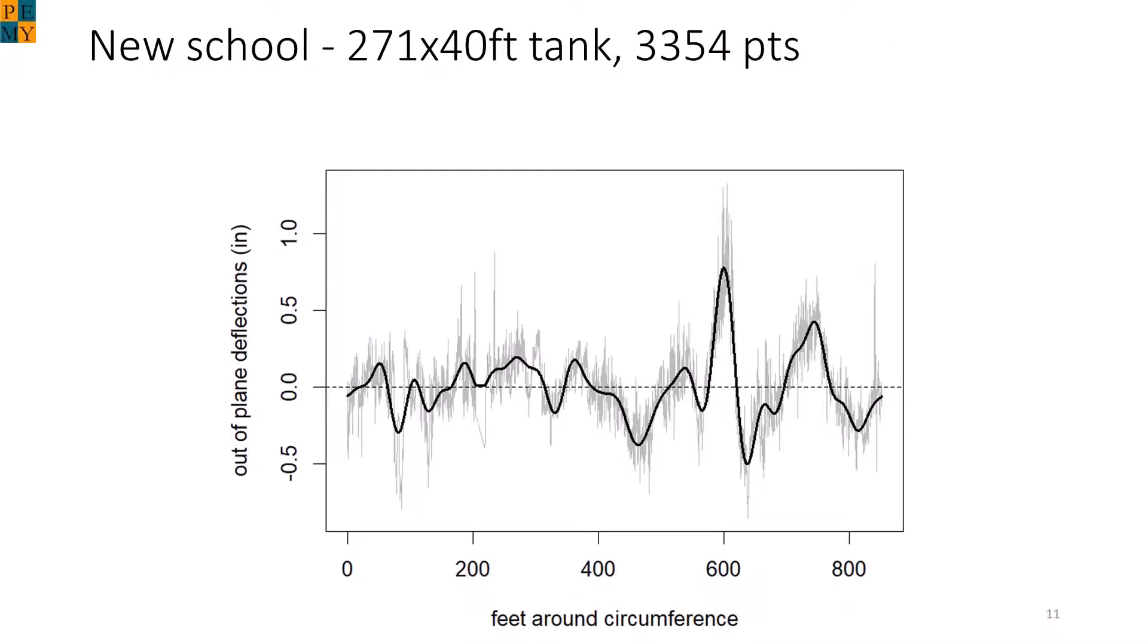Here is the actual laser scan data we have used. Notice the jagged appearance. Much of this is noise, which is inherent to all data sets. However, there is a clear signal as well. The heavy black line is the differential settlement, showing how much it is above or below the tilt plane, represented by the dotted zero line.